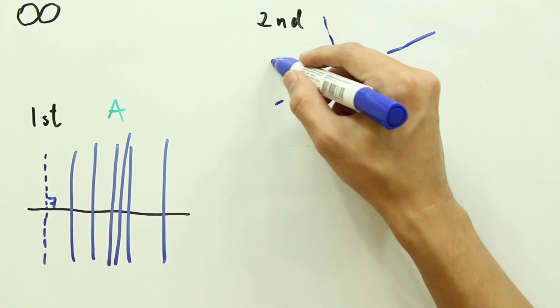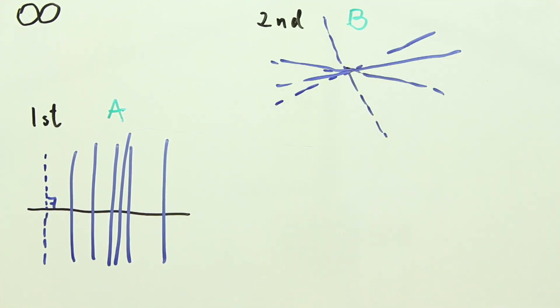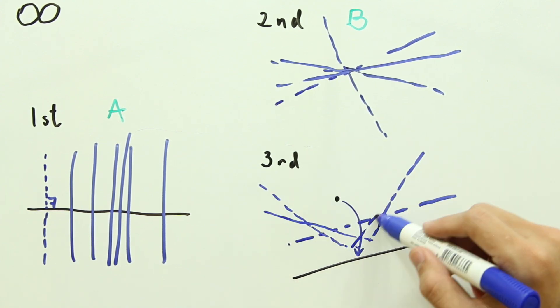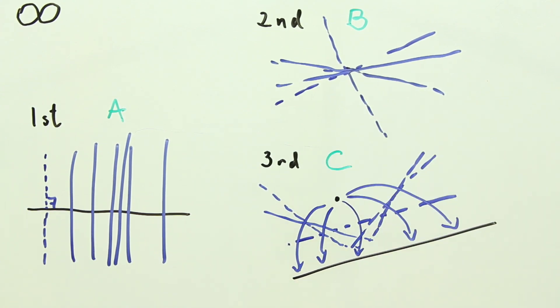Second, a fold that passes through a point. Let's call the solution set B. And third, a fold that places a point onto a line. Let's call the solution set C.